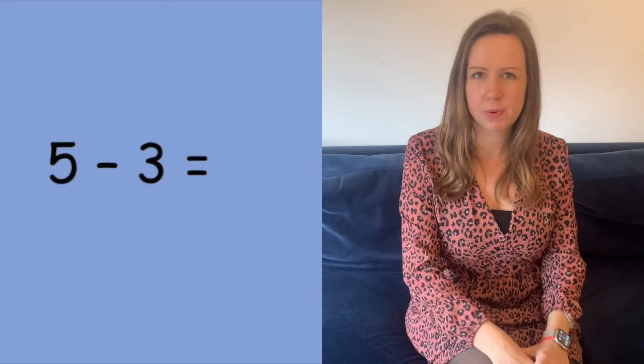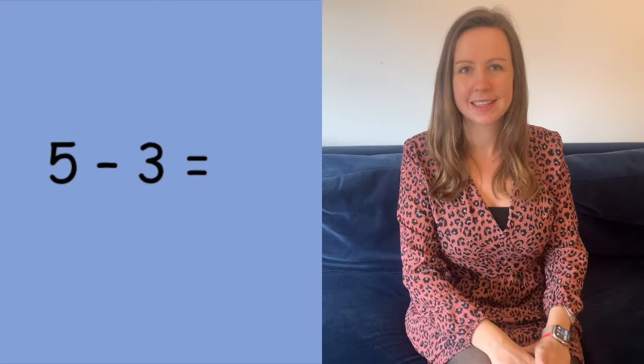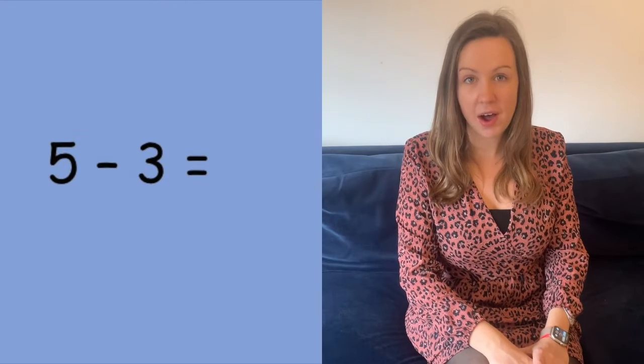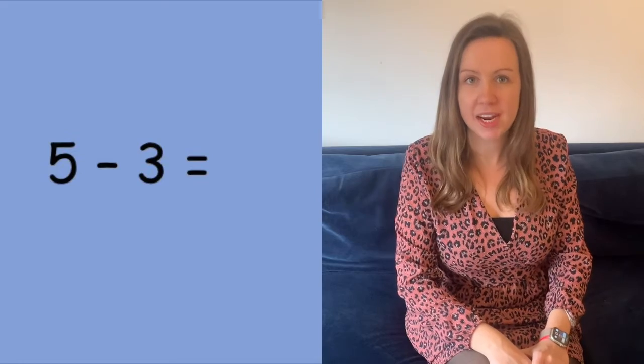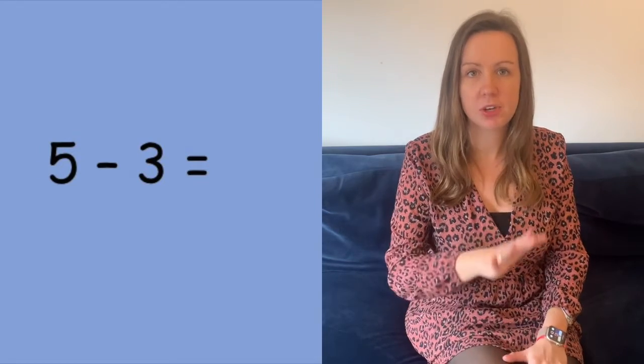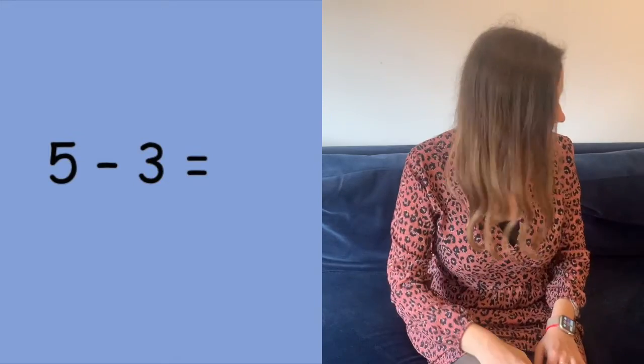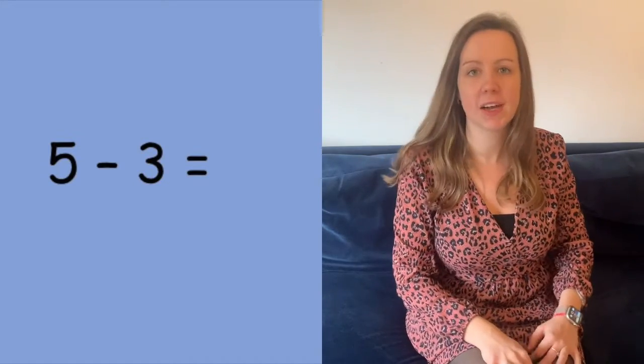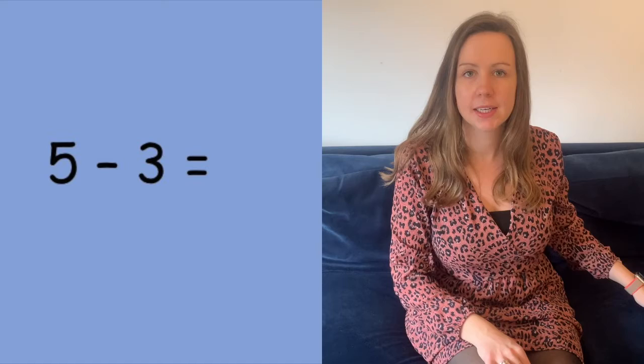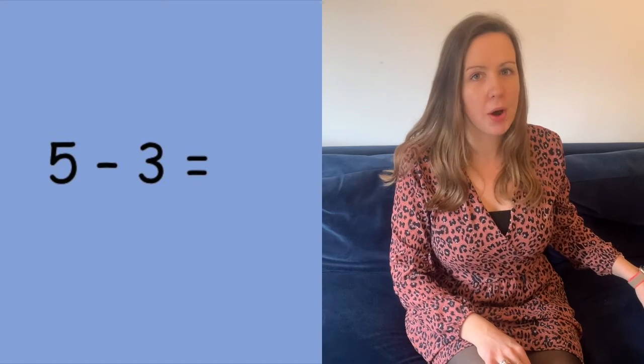Right my lovelies, the last question that we're going to do is this one. Can you tell me what it says? Five take away three. So five subtract three or five minus three, any of them are correct. Fantastic! So what's the first thing that I need to do then with these? Make a tower of five.